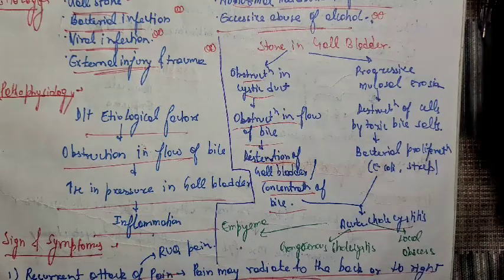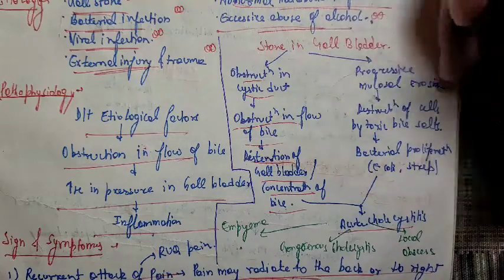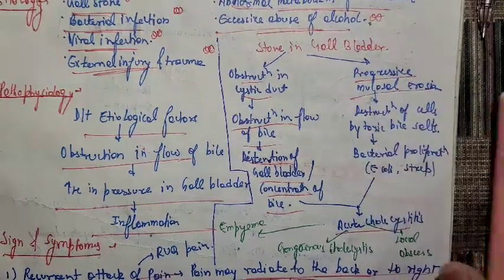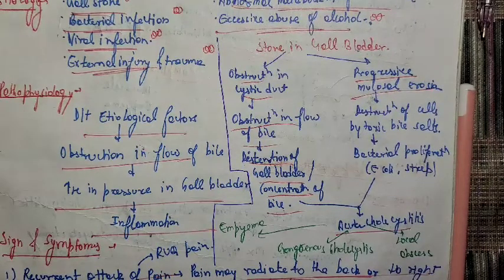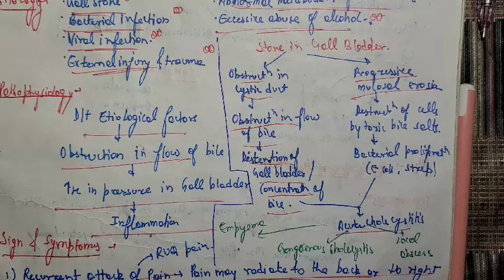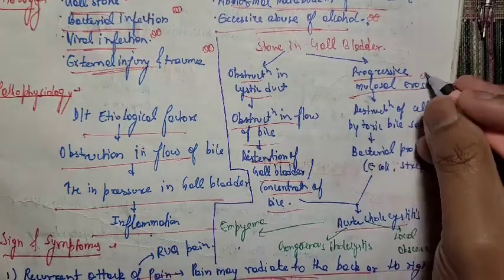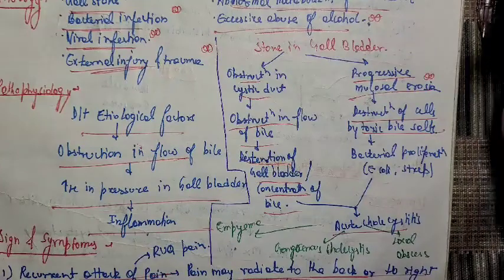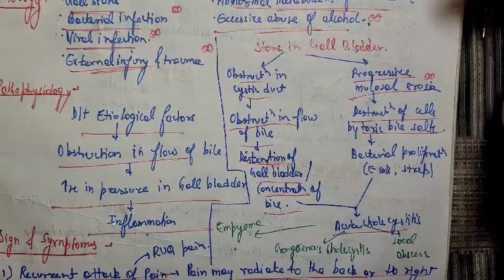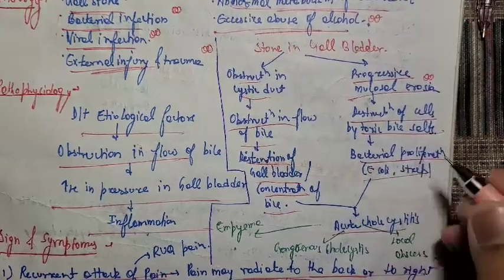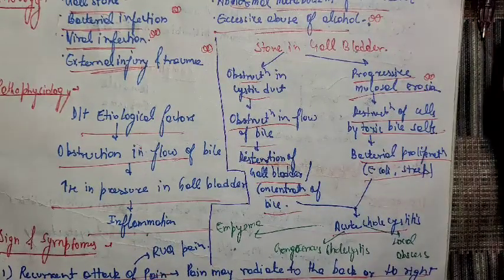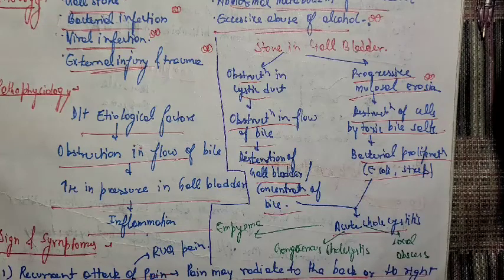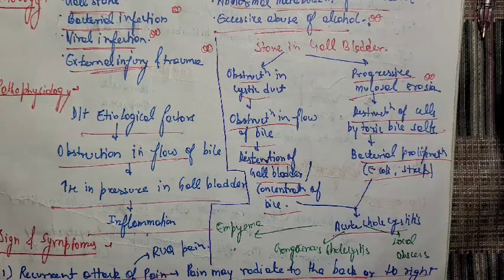In acute cholecystitis, if the stone is displaced within the gallbladder, it causes progressive mucosal erosion of the gallbladder wall. There is also destruction of cells by toxic bile salts. When there is destruction of cells, it creates a favorable environment for bacterial proliferation — organisms like E. coli and Streptococcus. So, destruction by toxic bile salts and bacterial infection together precipitate acute cholecystitis.